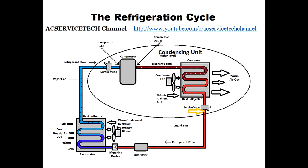Subcooling is used to check the refrigerant charge of a system with a thermostatic expansion valve. You're actually measuring a temperature decrease in liquid right at the service valve of the outdoor unit. This not only gives you the temperature decrease in liquid form, but it's also giving you a certain amount of volume of liquid to make sure that you have a steady column of liquid going to the thermostatic expansion valve.